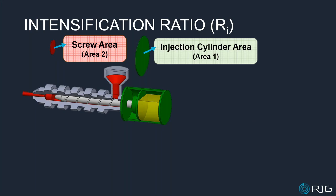There's something called intensification ratio, and we're showing this on a hydraulic machine. There are two key measurements: the diameter of the injection cylinder — that's the green cylinder — and the diameter of the screw or barrel. You calculate the area of a circle using diameter times diameter times 0.7854, which is a constant value equivalent to pi divided by four. We calculate the area of the injection cylinder and the area of the screw, then compare the two.